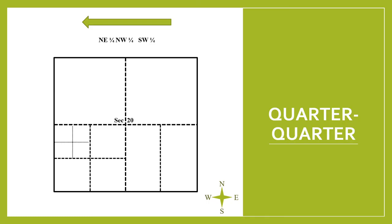This example starts from the right, or largest quarter, as the southwest quarter of section 20, then decreases to the northwest quarter of the previous quarter, and then identifies the northeast quarter of the previous as the final area.